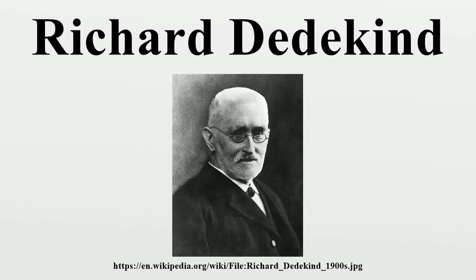Dedekind edited the collected works of Lejeune Dirichlet, Gauss, and Riemann. Dedekind's study of Dirichlet's work was what led him to his later study of algebraic number fields and ideals. In 1863, he published Dirichlet's lectures on number theory as Vorlesungen über Zahlentheorie, about which it has been written that although the book is assuredly based on Dirichlet's lectures, and although Dedekind himself referred to the book throughout his life as Dirichlet's, the book itself was entirely written by Dedekind, for the most part after Dirichlet's death. The 1879 and 1894 editions of the Vorlesungen included supplements introducing the notion of an ideal, fundamental to ring theory.